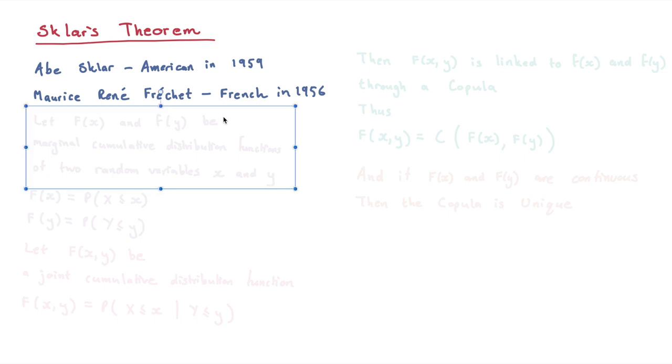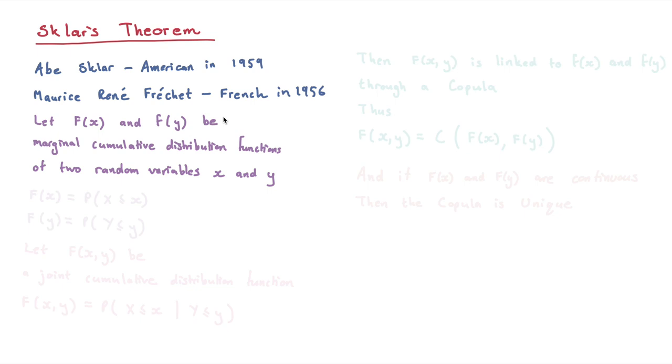And essentially the theorem is as follows. It says, let F(x) and F(y) be marginal cumulative distribution functions of two random variables x and y, which means F(x) is equal to the probability that x is less than x, and F(y) is equal to the probability that y is less than y.